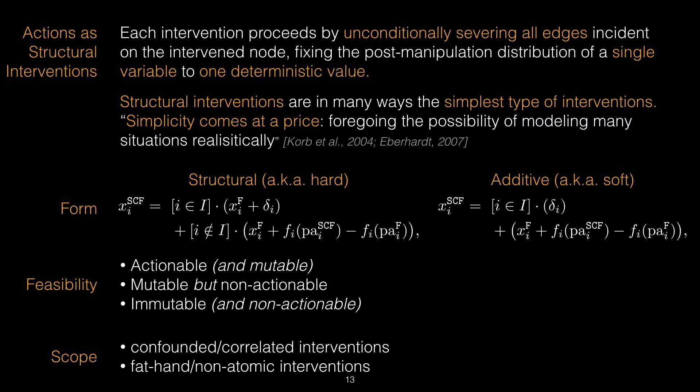Once we start thinking about the world in a causal manner and to think about actions as interventions, we are able to tease apart the definition of feasibility. While previous works only differentiated between mutable and immutable variables, also known as actionable versus non-actionable—for example, a bank balance is actionable but gender for the purposes of obtaining a loan is non-actionable—we can now describe a new form of variable, which is a mutable but non-actionable variable.